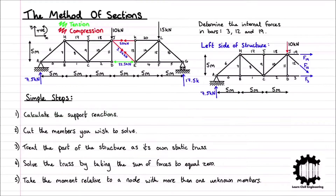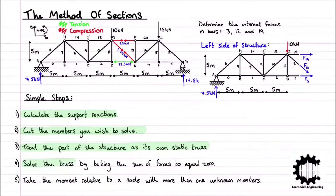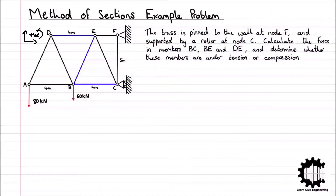In a previous video, we covered the theory for the method of sections in detail. We saw that the general steps include starting by calculating the reactions at the supports, then making a cut through the members you wish to solve and treating each side as its own static truss, solving one of the trusses by taking the sum of forces to equal zero, and finally taking the moment relative to a node with more than one unknown member. With that summary, we will begin to solve the first example problem.